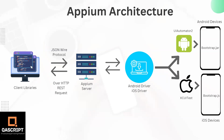On the client side of this architecture are the client libraries, which request the server to start a test automation session. This command is sent via the JSON wire protocol. The APM client libraries can span across multiple languages such as PHP, Java, Ruby, JavaScript, C#, or Python. The JSON wire protocol enables the APM client to communicate with the APM server. It is developed by the WebDriver developers team and enables developers to access standard and predefined endpoints via a RESTful API. All of this communication happens over HTTP, sending requests to the HTTP server.